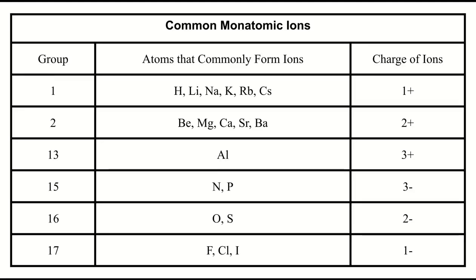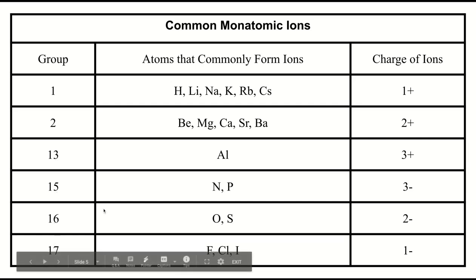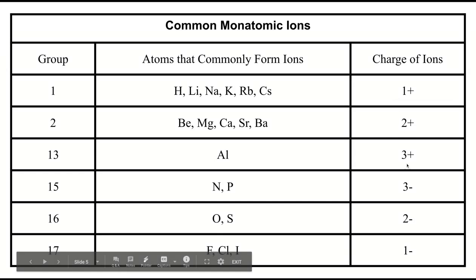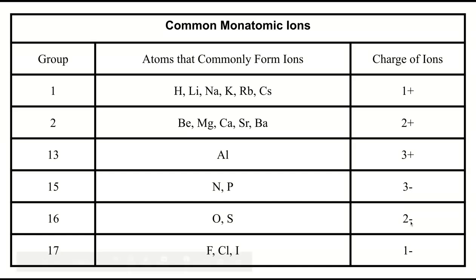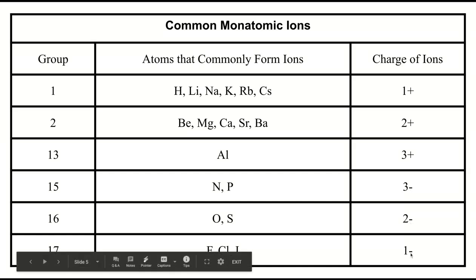Here's a list of some common monatomic ions, and they are found in groups 1, 2, 13, 15, 16, and 17. You'll see that their respective charges are 1+, 2+, 3+, 3-, 2-, and 1-.